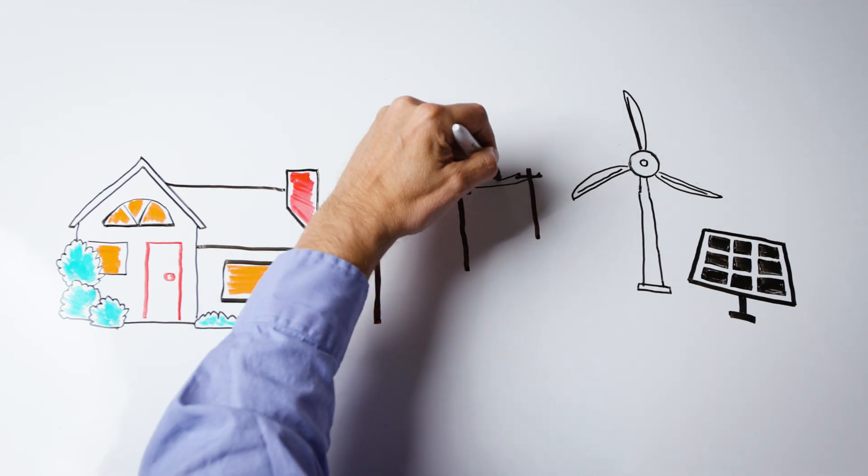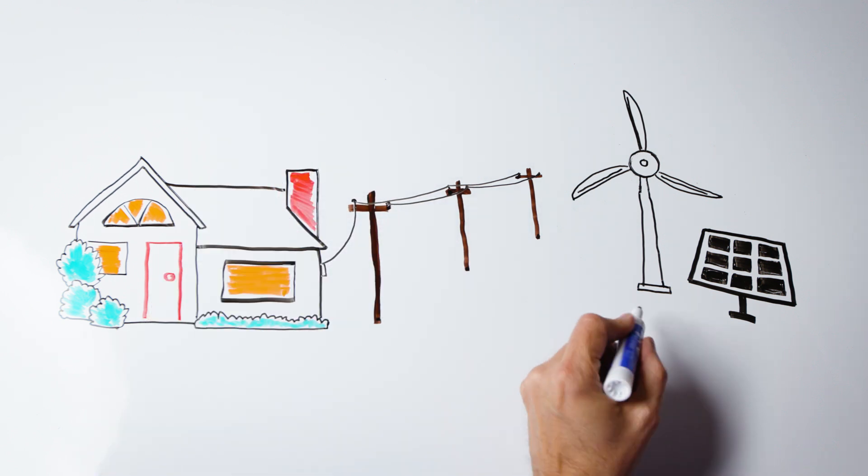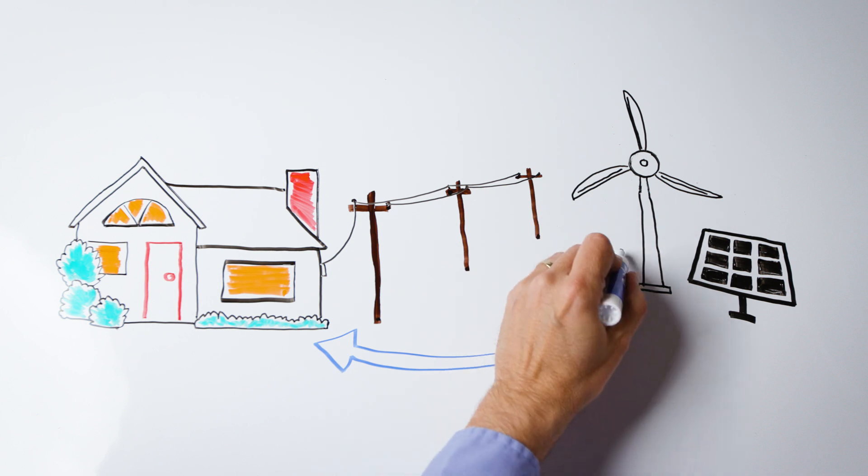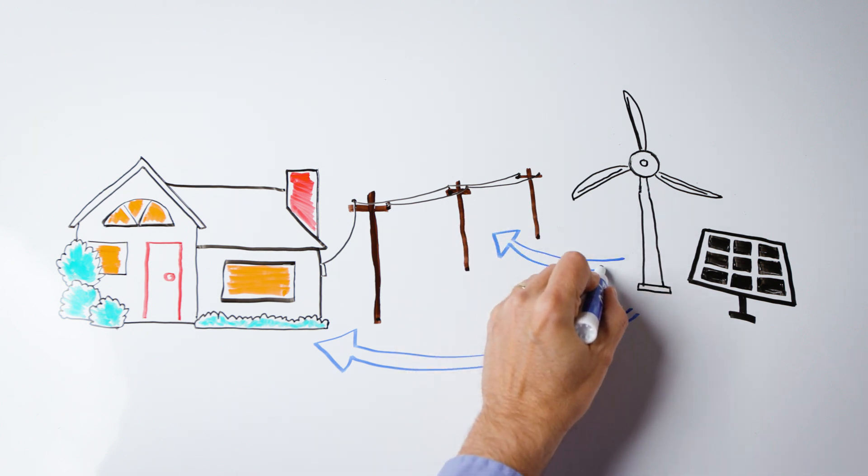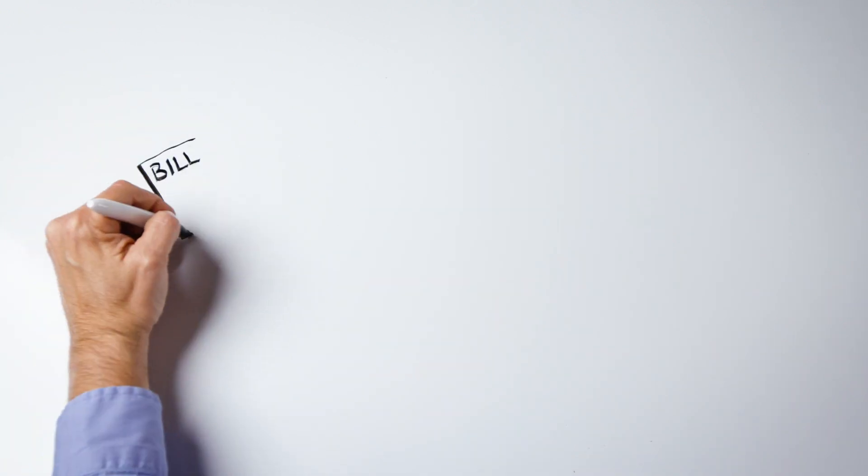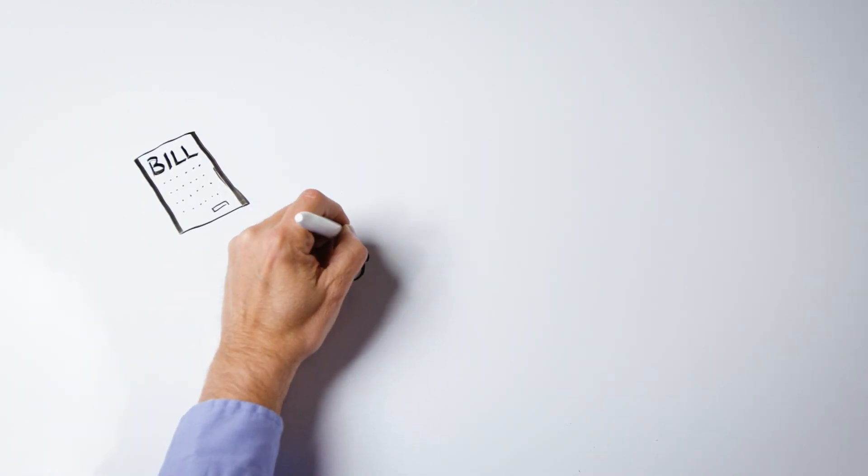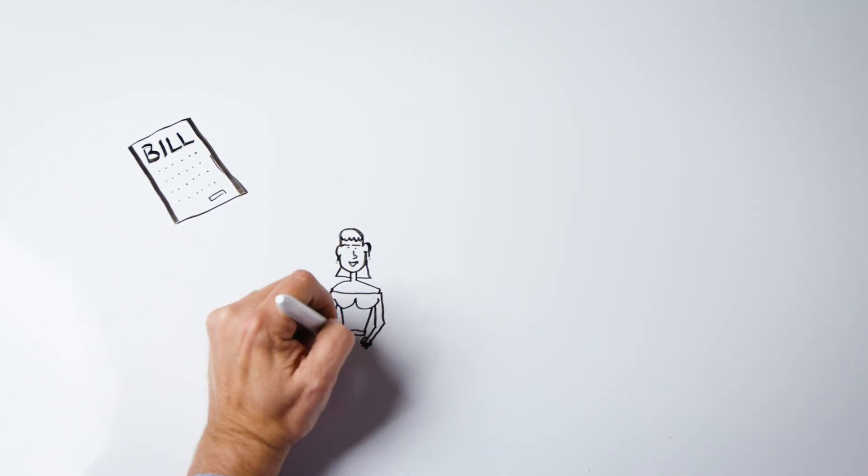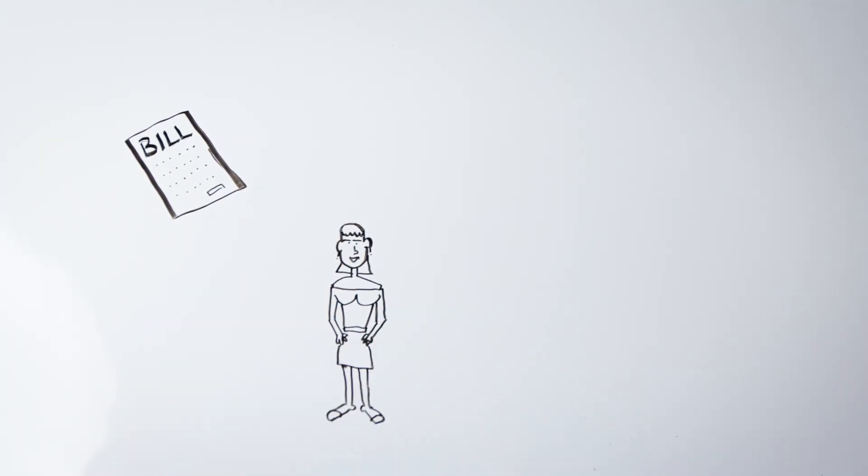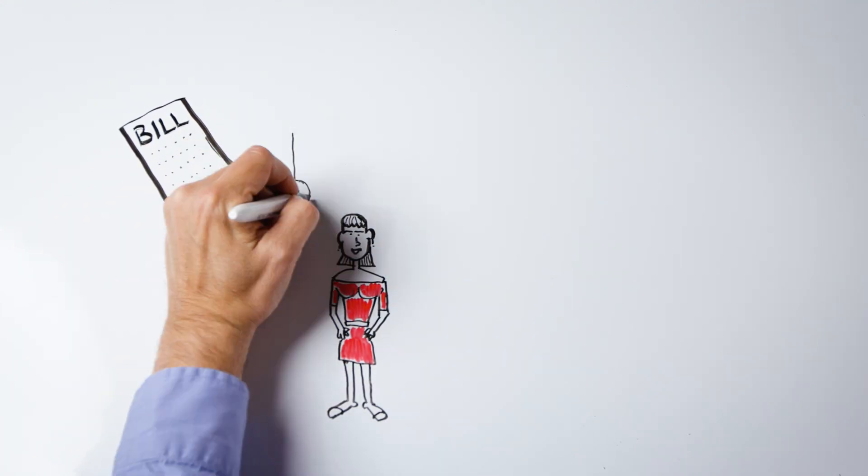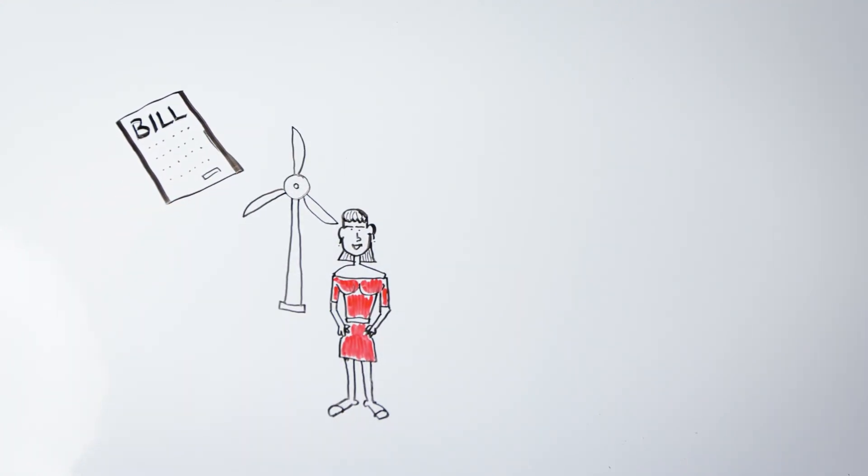And the utility will allow the customer to deposit any excess electricity they produce back onto the electric grid, even if it is produced at a time the utility does not need more generation. At the end of the month, this back and forth flow of electricity may balance out on paper, but in reality, the net metering customer needed the grid to keep a steady flow of electricity to their home. This process does have a cost-shifting impact on all electric rate payers.